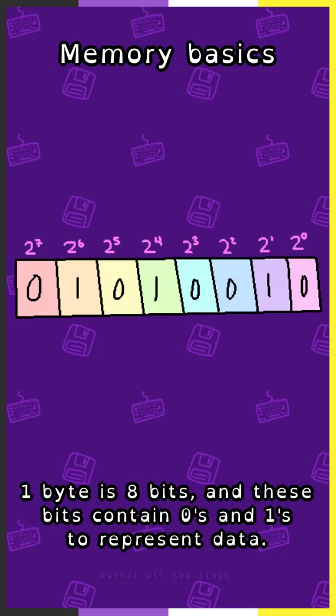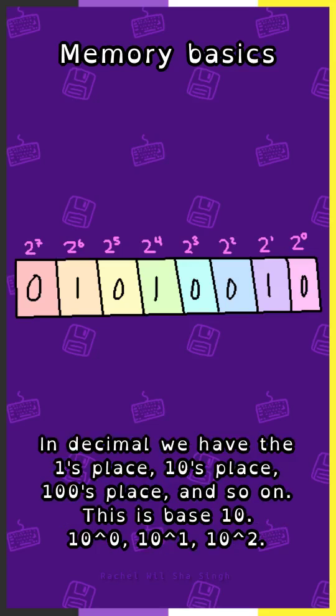1 byte is 8 bits, and these bits contain zeros and ones to represent data. In decimal, we have the ones place, tens place, hundreds place, and so on. This is base 10.